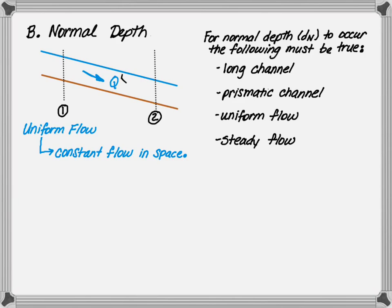Second, the channel must be prismatic. This means that the overall geometry of the channel is constant with no natural changes. Ideally, we think of a rectangle, a triangular, or a trapezoidal, or circular cross-section.